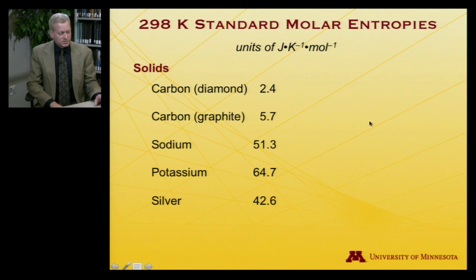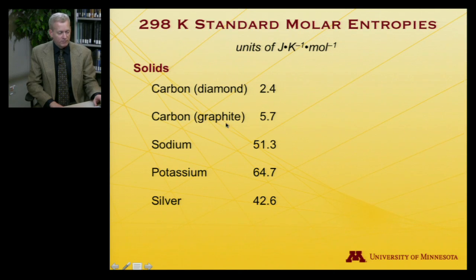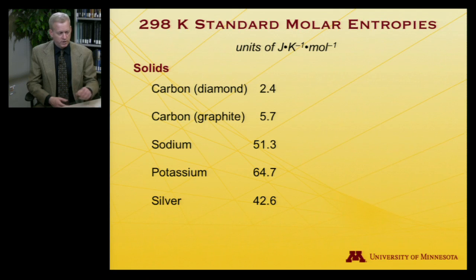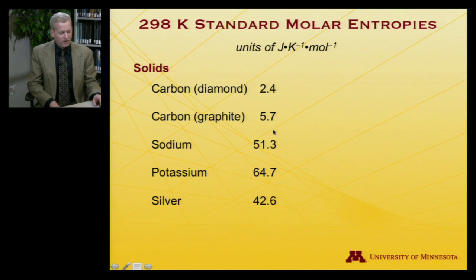Starting with some solids: here we have the entropies of carbon in two different allotropes, its diamond form and its graphite form. They have very small entropies at 298 Kelvin. Nitrogen gas at this temperature had a huge entropy of almost 200, but for these solids it's only a couple percent of that — 2.4 for diamond and 5.7 for graphite.